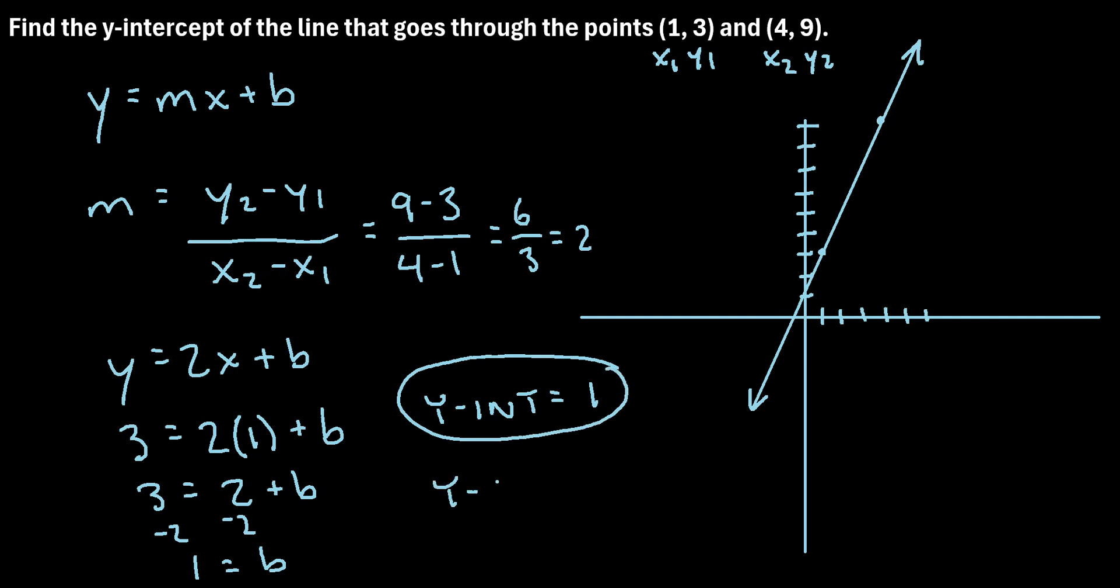Or if we wanted to write it as a coordinate pair, we could write y-intercept equals (0, 1). So we can see that this point (0, 1), that's right about here, that does look like that is right where that line crosses through the y-axis. So that would be the y-intercept of this line.